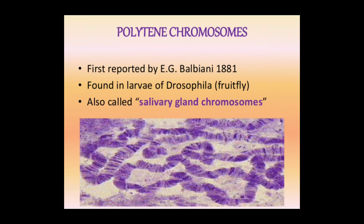Friends, after discussion of lampbrush chromosomes, today we discuss polytene chromosomes. These are also a special type of chromosome. First reported by E.G. Balbiani in 1881, found in the larva of Drosophila. It is also called salivary gland chromosomes.